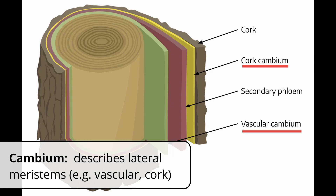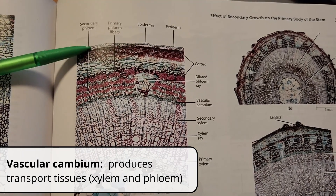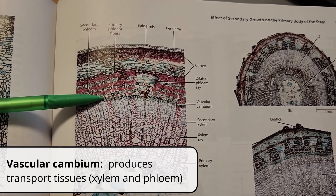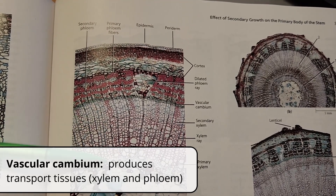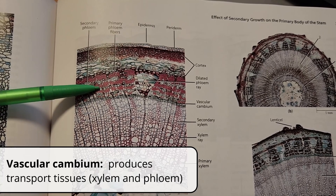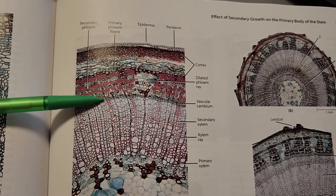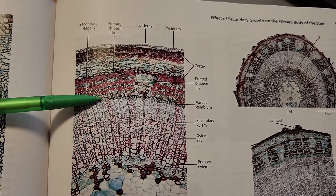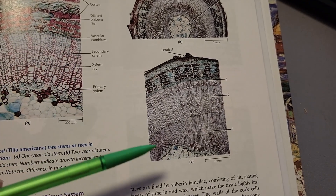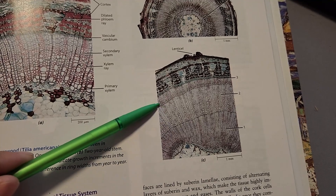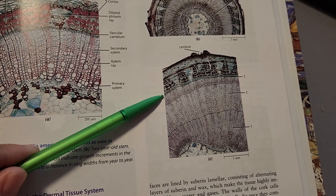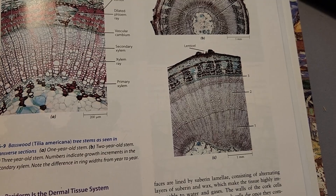There are a couple of types of lateral meristems, and the word cambium is used to describe them. The two that are relevant to arborists are the cork cambium and the vascular cambium. The vascular cambium is located just inside the bark of a tree. It produces the vascular or transporting tissues, xylem and phloem. The xylem is produced to the inside of the vascular cambium and the phloem to the outside, so xylem is what gets laid down as wood every single year.